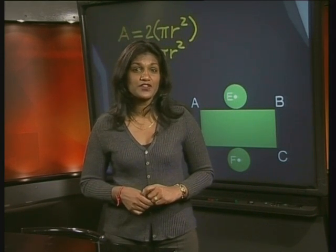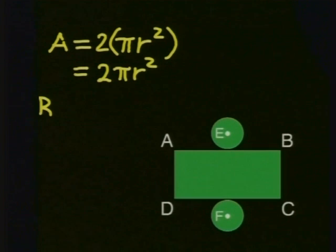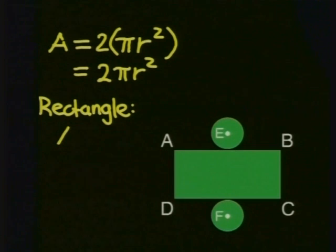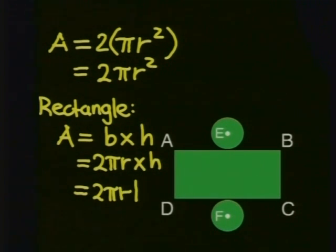Do you remember what the formula for the circumference of a circle is? The circumference is given by the formula 2πr. So, let's write the area for the rectangle. We know that area is given by base times perpendicular height. We just found the base to be the same as the circumference of the circle, which is 2πr, and h is the height of the rectangle. So, we get the area of the rectangle to be 2πrh.